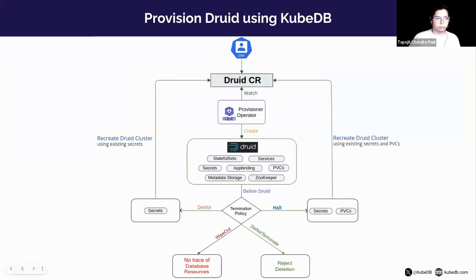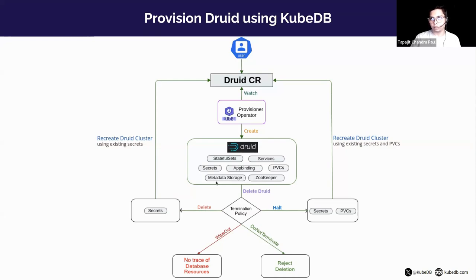The KubeDB provisioner operator watches the Druid custom resource. When a user creates a Druid custom resource, the operator creates the Druid cluster along with the necessary StatefulSets, services, and secrets. It also deploys the external dependencies — metadata storage and ZooKeeper. By default it deploys MySQL, but if you specify Postgres it will deploy that instead.